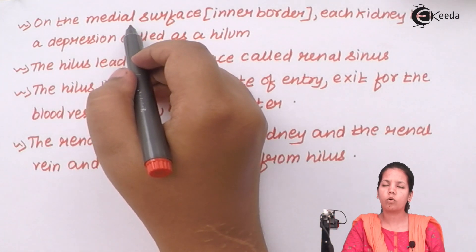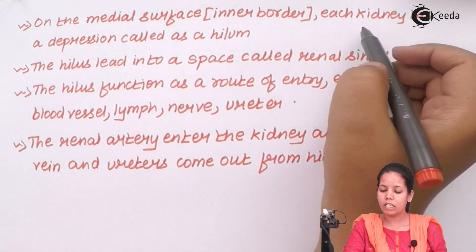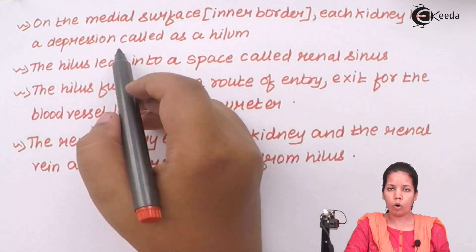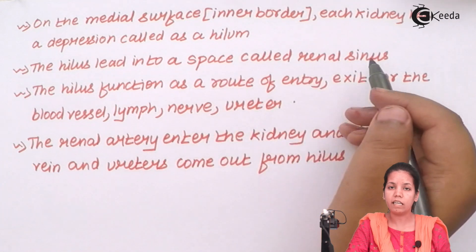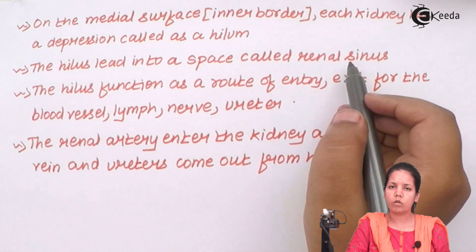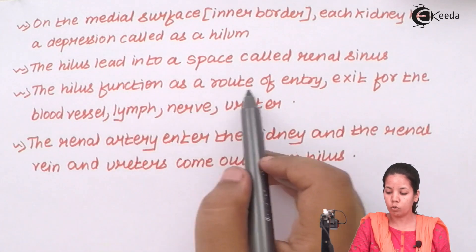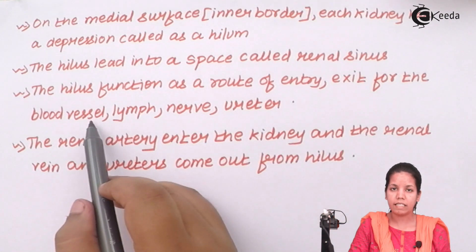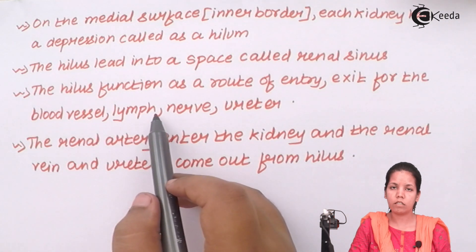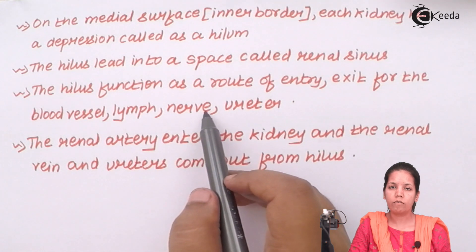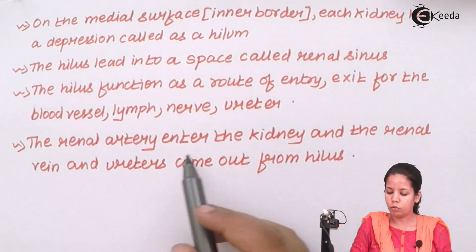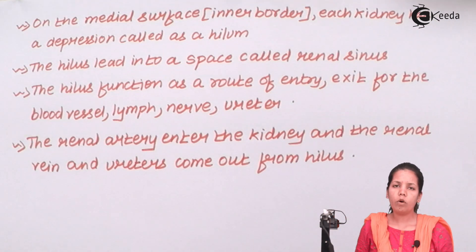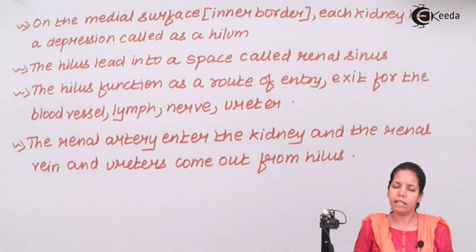If you see the inner surface or inner border of the kidney, each kidney has a depression or concave structure which is termed as the hilum. The hilum leads into a space which is termed as renal sinuses — empty spaces or cavities. The hilum functions as a route for entry and exit for blood vessels that supply blood to the kidney, lymph from the lymphatic tissue, various nerves carrying impulses, as well as the ureter. The renal artery enters the kidney, and the renal vein and ureters come out from the hilum region.